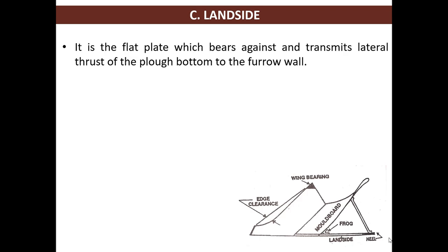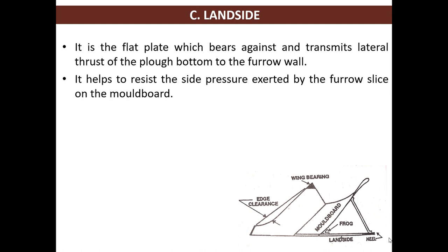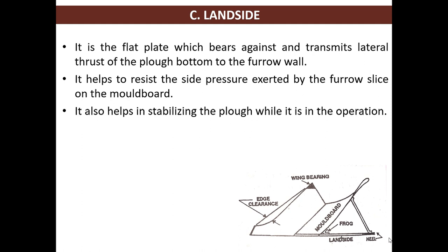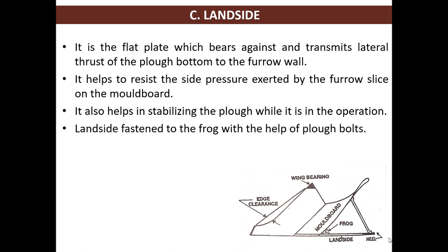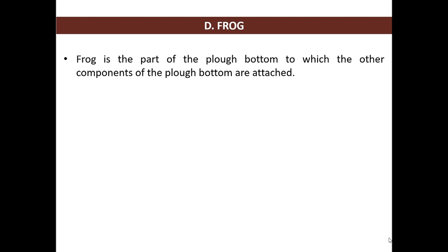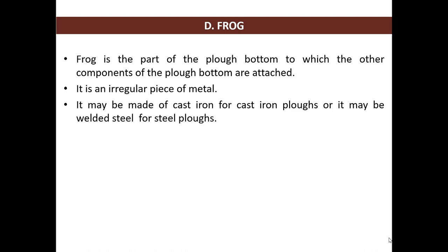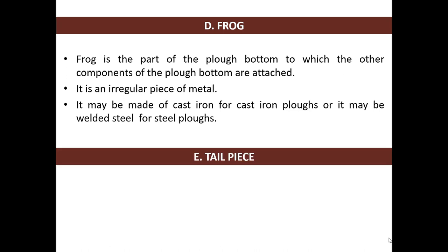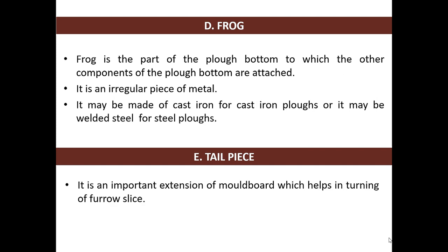What is land side? It is the flat plate which bears against and transmits the lateral thrust of the plow bottom to the furrow wall. It helps to resist the side pressure exerted by furrow slice on the moldboard and also helps in stabilizing the plow while in operation. Land side is fastened to the frog with the help of plow bolts. The rear bottom of the land side is known as heel, which is rubbed against the furrow sole. Frog is the component to which all other components of the plow bottom are attached - it is an irregular piece of metal, made up of cast iron or welded steel. Tailpiece is an important extension of moldboard which helps in turning of furrow slice.